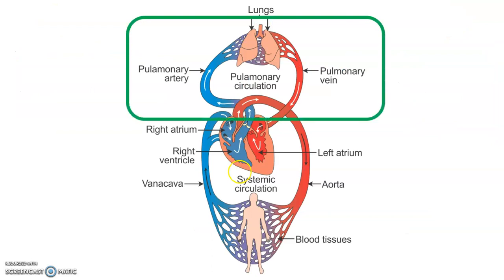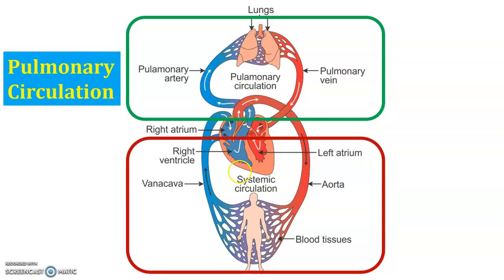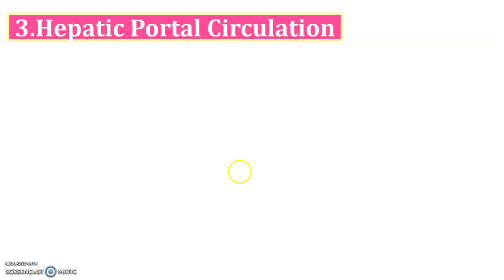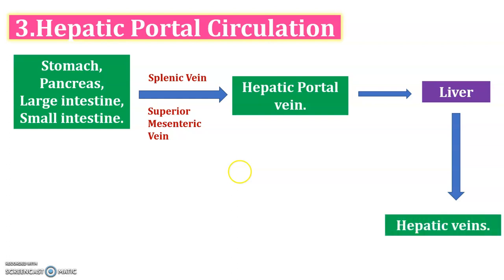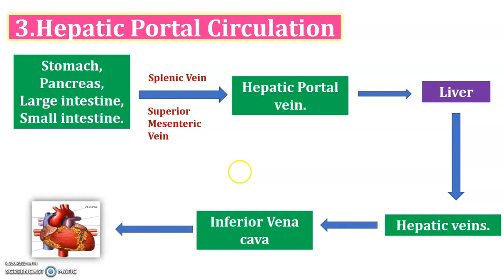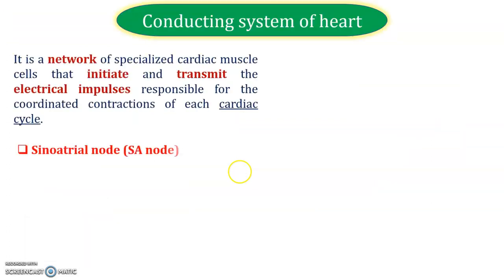In summary: pulmonary circulation means lungs to heart, and systemic circulation means body parts to heart. The third type is hepatic circulation. The blood from the stomach, large intestine, and small intestine goes into the hepatic portal vein. This is the third type of circulation.